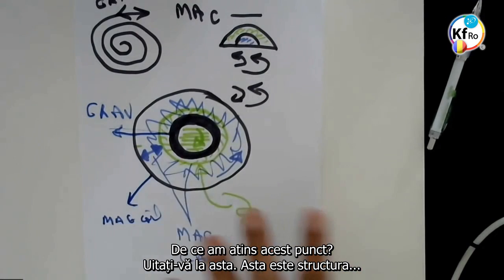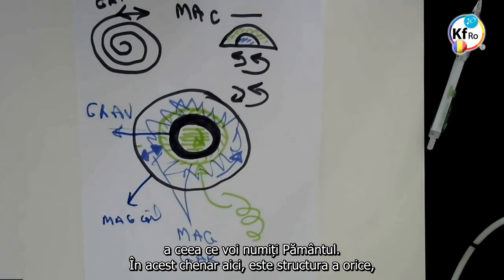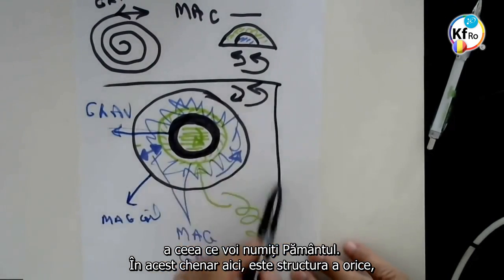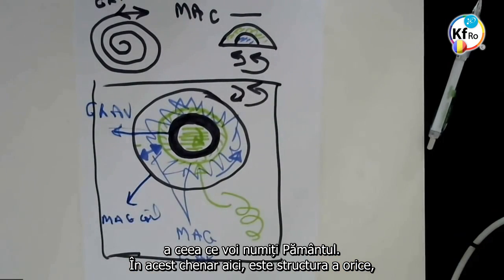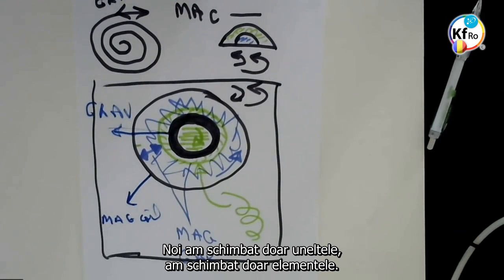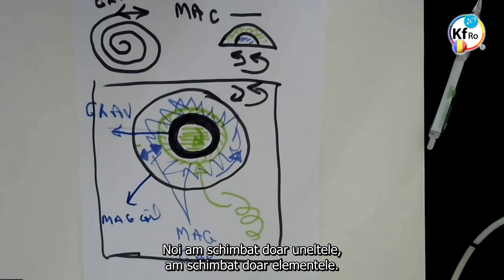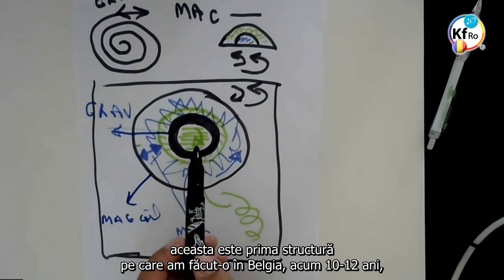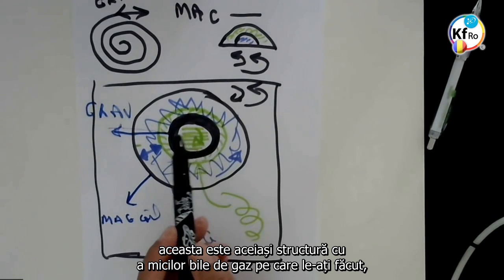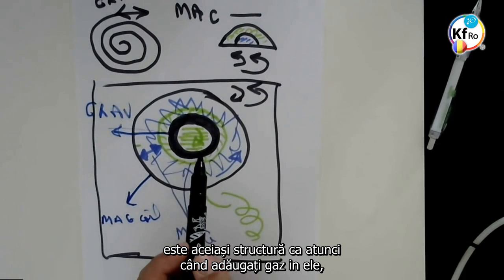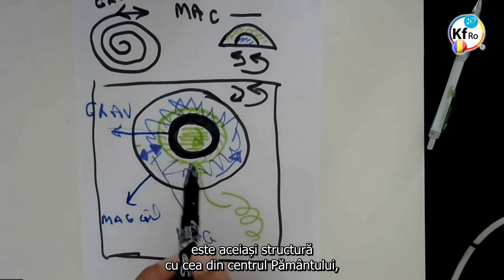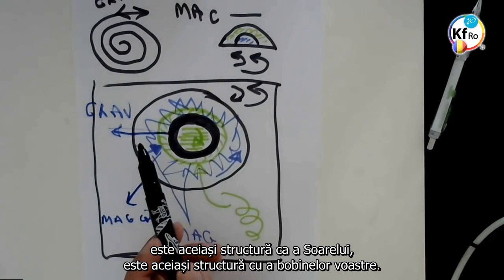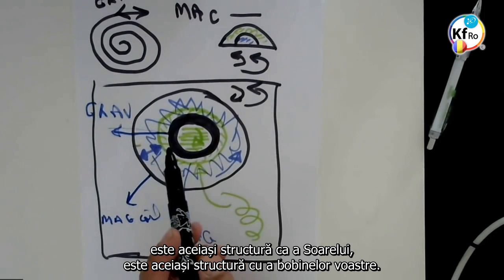Look at this structure of what you call the Earth. In this bracket here is the structure of everything that has been done up to now in all the teachings. We have just changed the tools, we have just changed the elements. This is the first Iranian core eight years ago, nearly seven, eight years ago. This is the first structure we did in Belgium ten, twelve years ago. This is the same structure as the little gas balls you made. It's the same structure when you added GANS in. It's the same structure as the center of the Planet Earth. It's the same structure as the Sun. It's the same structure as your coils. Nothing has changed.